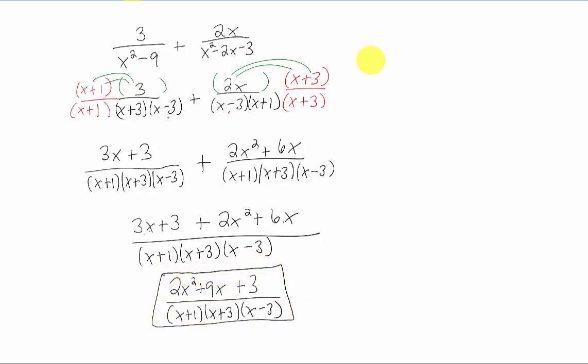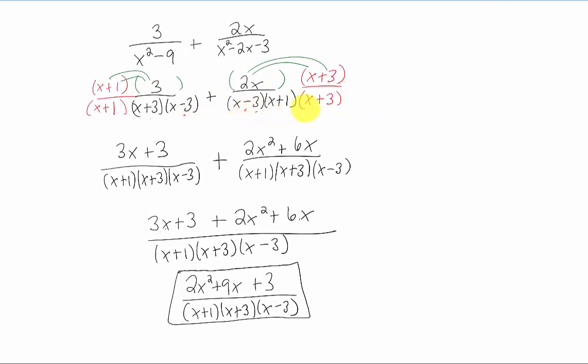Just a little vocabulary for you. When we found our common denominator it was the smallest possible denominator we could find. We call this the least common denominator. Some people call it the lowest common denominator. We just call it LCD. In this case our LCD was x plus 1 times x plus 3 times x minus 3.